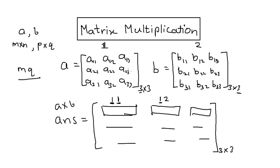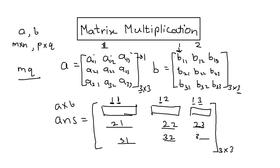Consider first row, first column: the first row is multiplied with the first column of the second matrix. We multiply the first element with the first element, second with second, third with third, and add them. So we get A11×B11 + A12×B21 + A13×B31. Similarly for first row and second column, we multiply the first row of the first matrix with the second column of the second matrix.